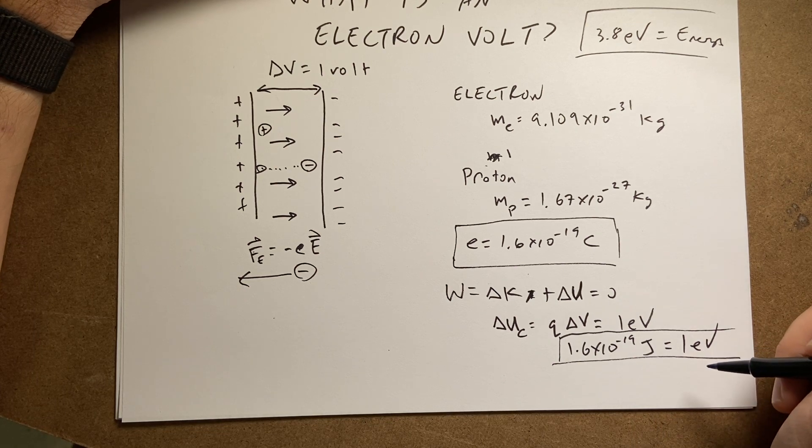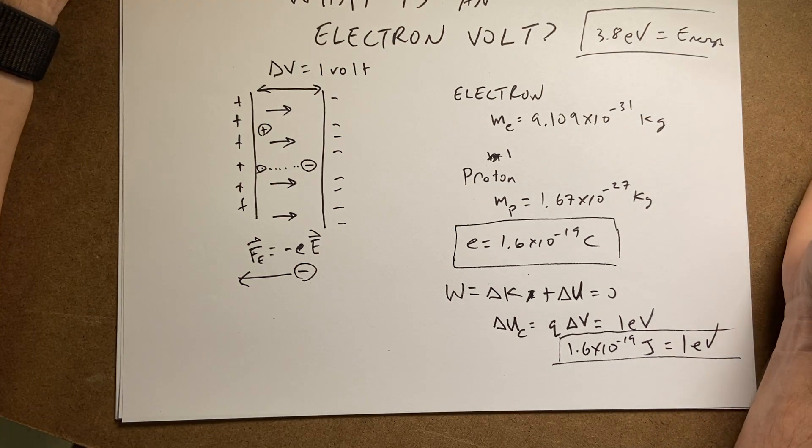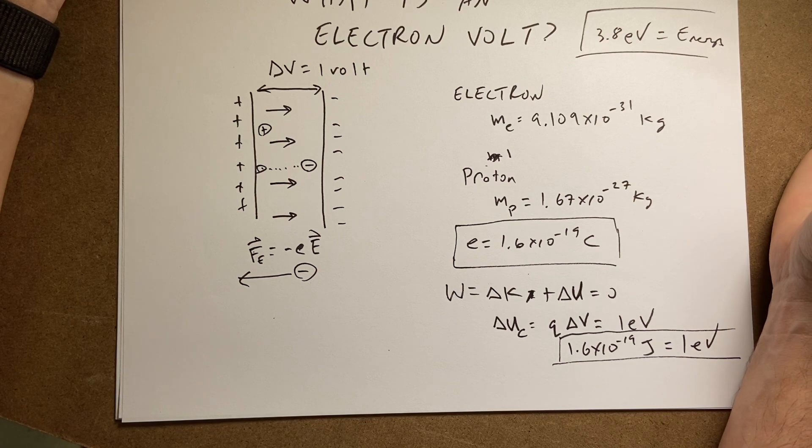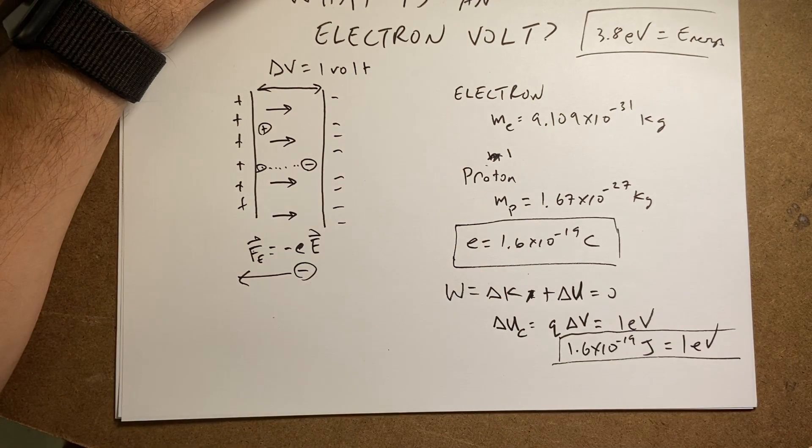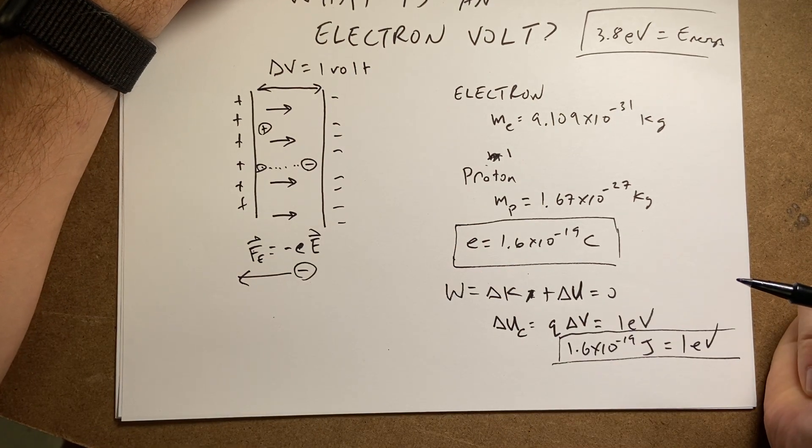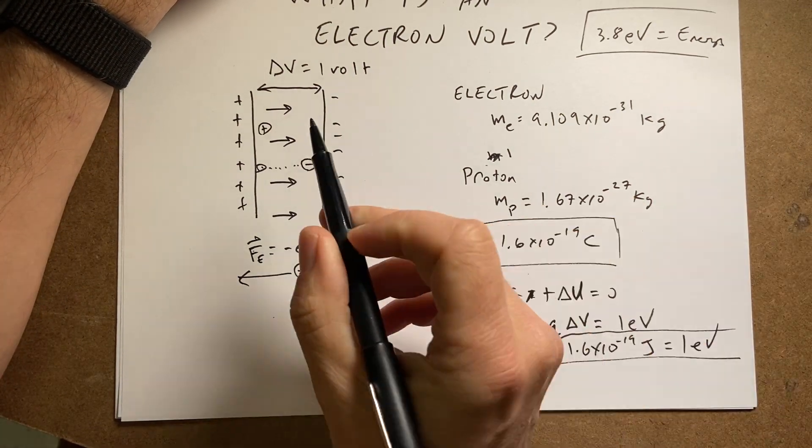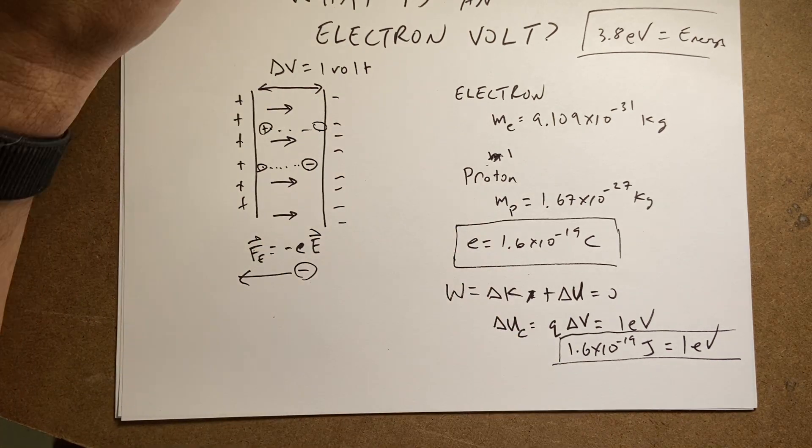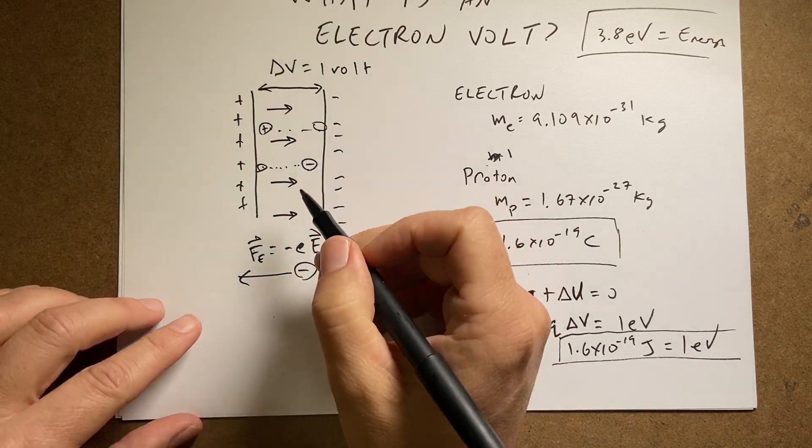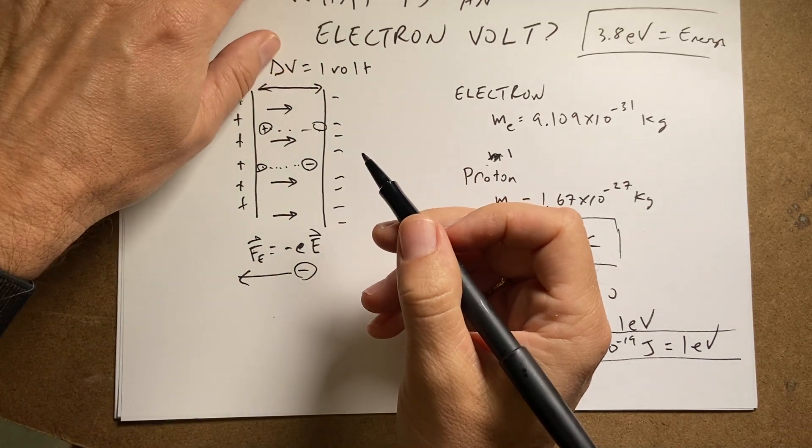And so we use this unit for particle accelerators, because if I have, if I want to actually accelerate electrons over one volt, I could do that. Okay, now what if I did it with a proton? It doesn't have to be an electron. Okay, it's just a unit of energy. I could take the proton and let it go, it would speed up too, and it'd be over here. Let's compare the change in speed for the electron and the proton, just for fun.